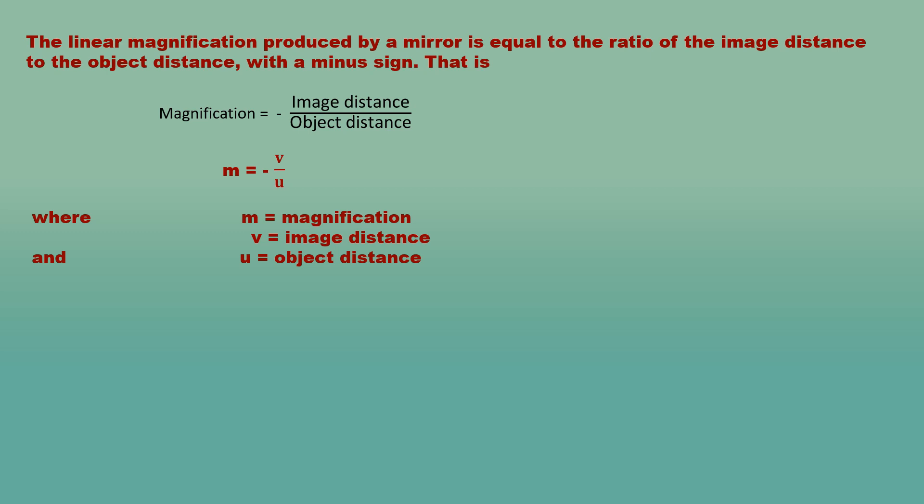The linear magnification M produced by a mirror is equal to the ratio of the image distance to the object distance with a minus sign. That is, magnification M = −(image distance / object distance) = −V/U.